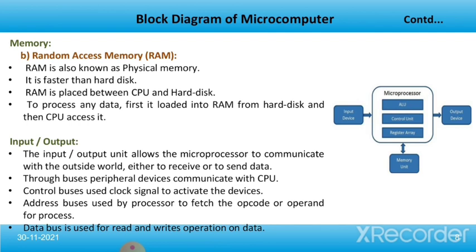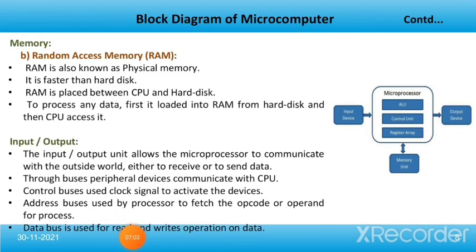The last block is the input-output unit. The input-output unit allows a microprocessor to communicate with the outside world, either to receive or to send data. Through buses, peripheral devices communicate with the CPU. Control buses use clock signals to activate the devices. Address buses are used by the processor to fetch the code or operand for processing, and the data bus is used for read and write operations on data.